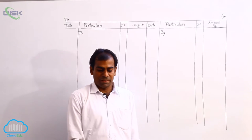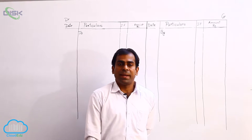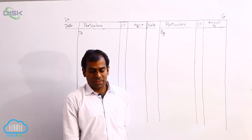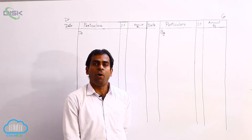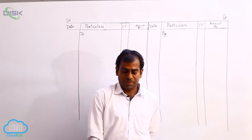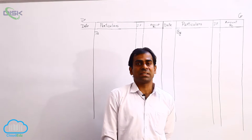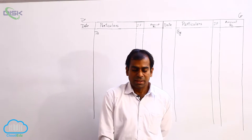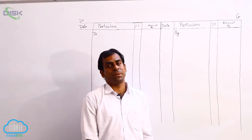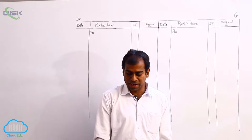We will be discussing the third problem in the chapter Ledger. We have seen yesterday how to prepare an account. In this chapter, you have only one problem which deals with preparation of all the accounts for which you write journal entries — that is the first problem. Coming to the third problem, it is again based on preparation of a single account. There are several transactions, but here you are going to prepare only one account, that is of the person by name Sudha.